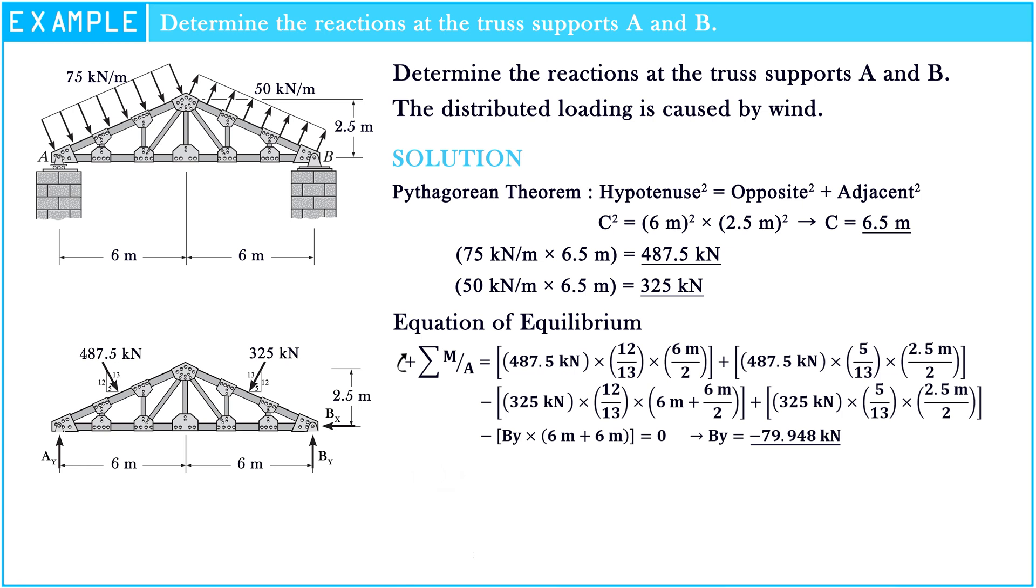The sigma of force along y-axis is equal to zero. Ay plus negative 79.948 kN plus 325 kN multiply by 12 over 13 minus 487.5 kN multiply by 12 over 13 is equal to zero. Hence, Ay is equal to negative 229.948 kN.